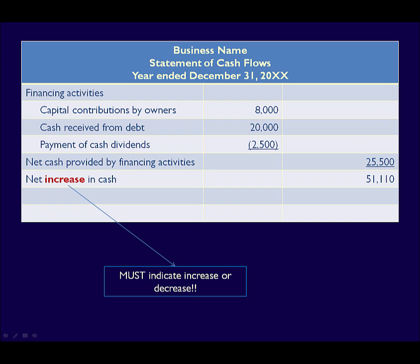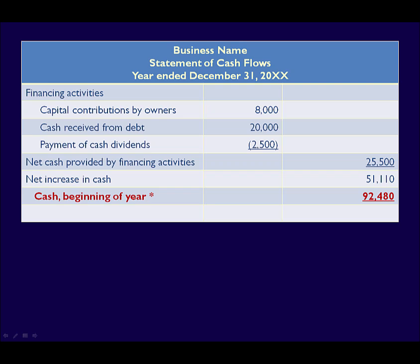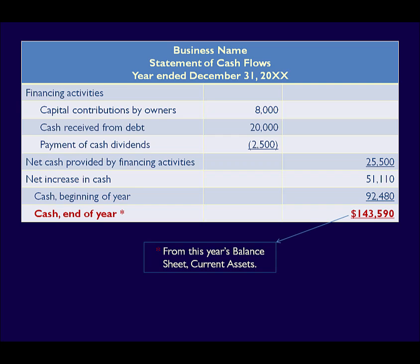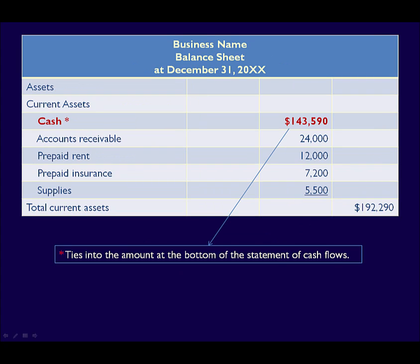The subtotal must indicate if the business's overall cash position has increased — as is the case here — or decreased. But what does that mean? Nothing, until you add it to the opening cash balance from the current year. The opening cash balance from this current year is equal to the closing balance from the prior year's balance sheet. This statement is showing how cash changed between the beginning of the year and the end of the year, so we must start with the cash at the beginning of the year and add or deduct the changes to get the cash at the end of the year. The cash balance at the end of the year is equal to the cash balance on the balance sheet in the cash account listed under current assets.